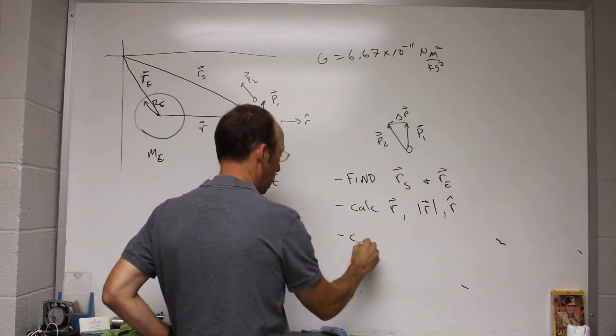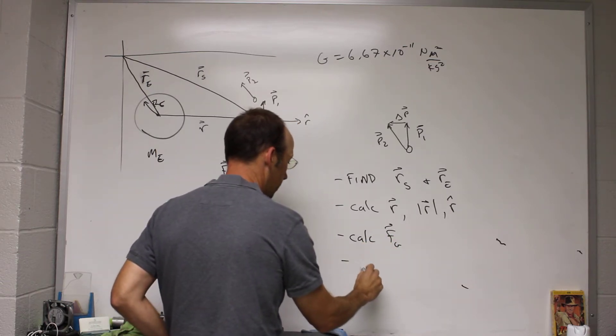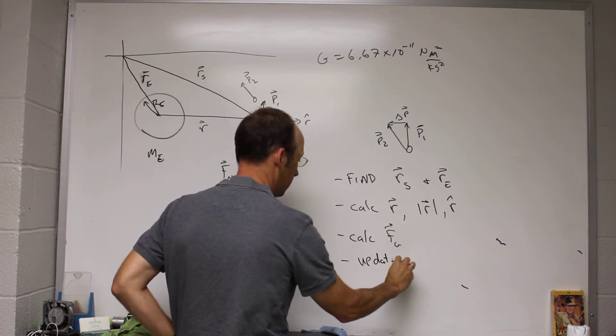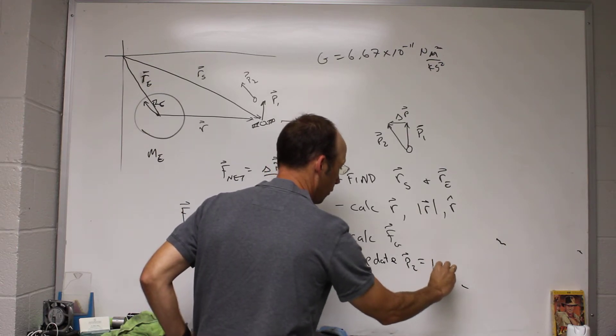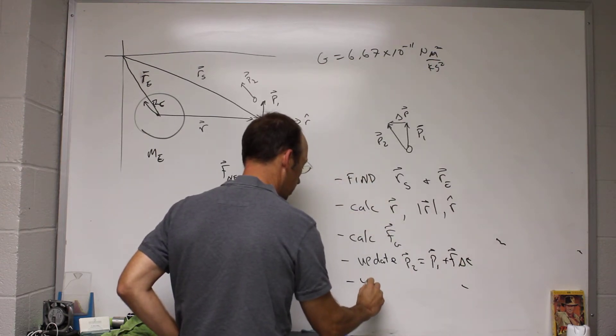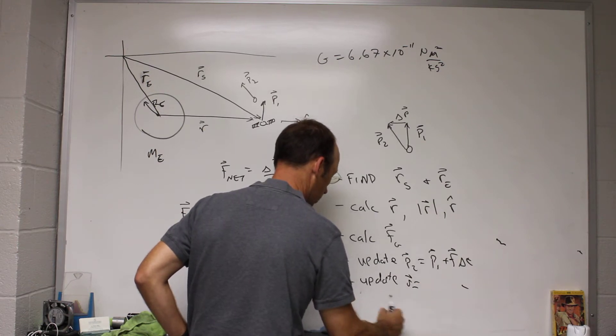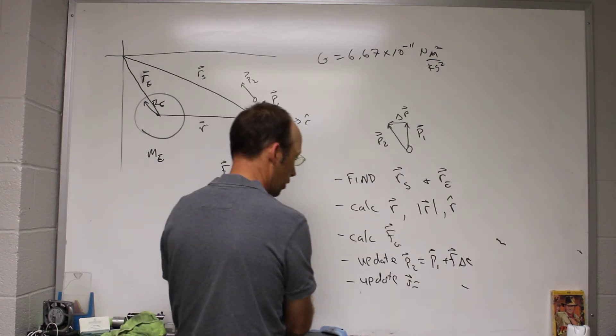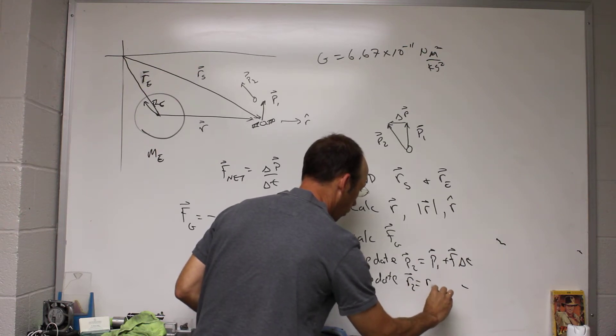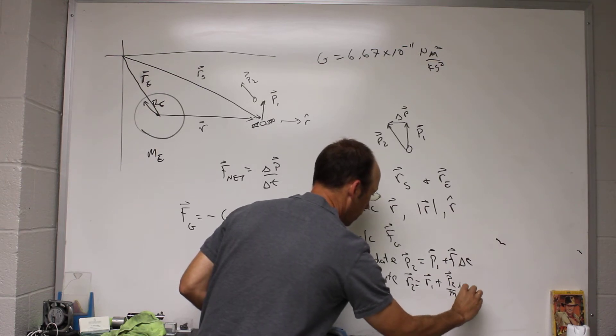Three, calc F gravity. Next, update momentum. So this is going to be P2 equals P1 plus F delta T, and then update position. P2, R2, I should write more clearly, R2 equals R1 plus P2 over M delta T.